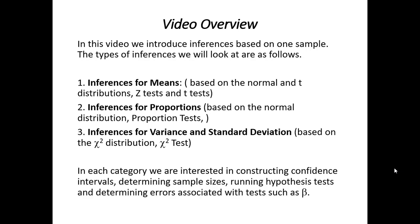Now, in each of these categories, we're interested in constructing confidence intervals, determining sample size and running hypothesis tests, as well as determining errors associated with tests such as beta. For example, the probability of a type 2 error. This is known as beta.